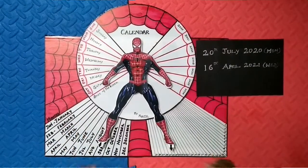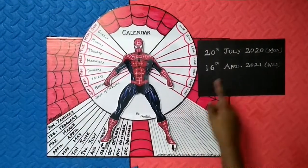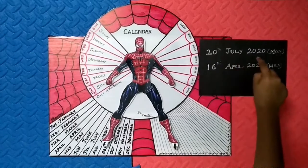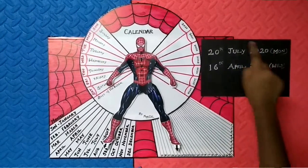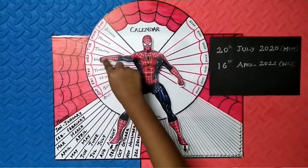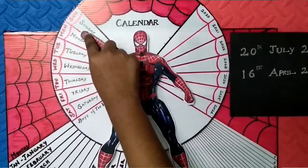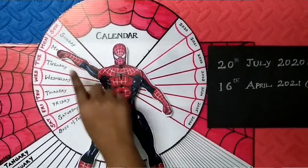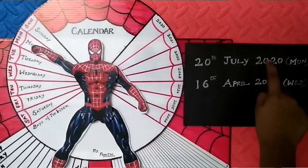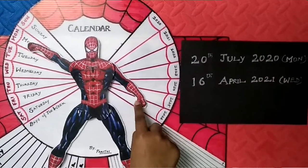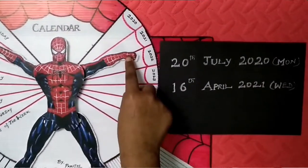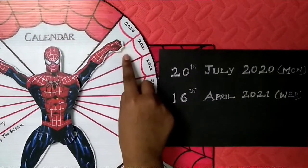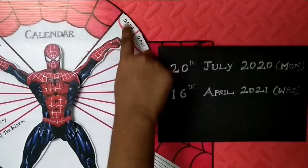Let me show you how to find the date. Here are two examples. The first is 28th July 2020, Monday. Let's go to Monday — we have to move the right hand to Monday. Next, the year: 2020. So let's move to 2020. We have to move the left hand to the year.